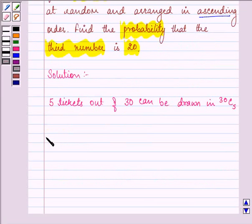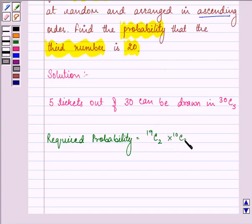So the required probability will be equal to 19C2 times 10C2 divided by 30C5. Because since the third ticket must be 20 in number, it means 2 tickets are less than 20 and 2 are more than 20.